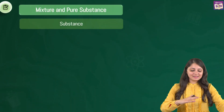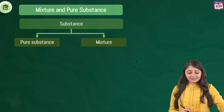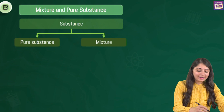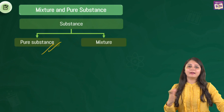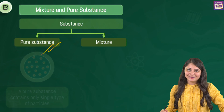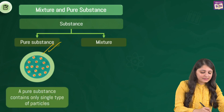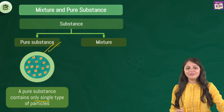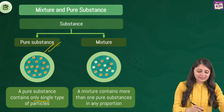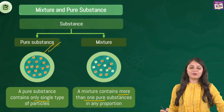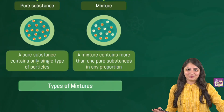Now you know about mixtures and pure substances. On the basis of chemical nature, matter can be pure or impure. By impure we mean different mixtures. A pure substance contains only a single type of particles, and for mixtures there is more than one pure substance present in any proportion.